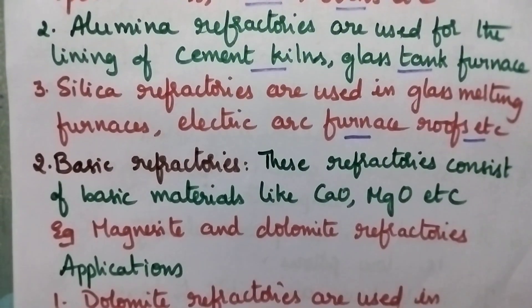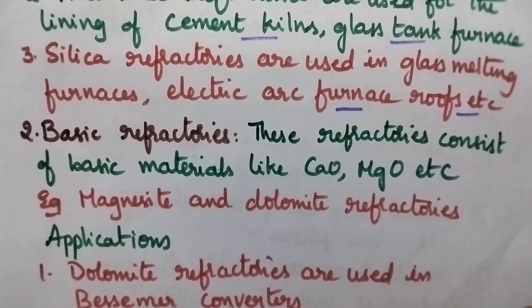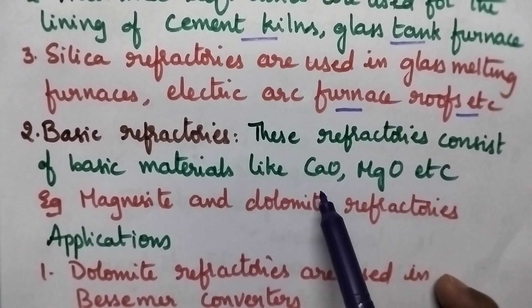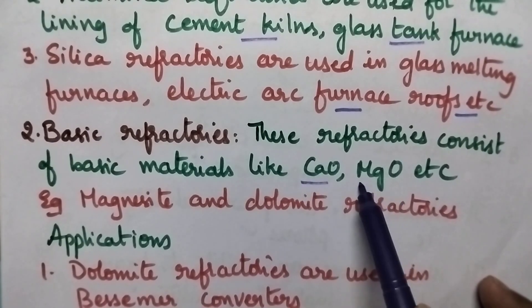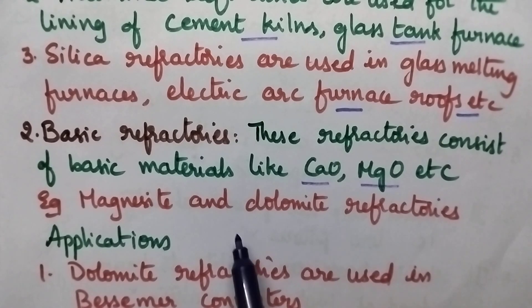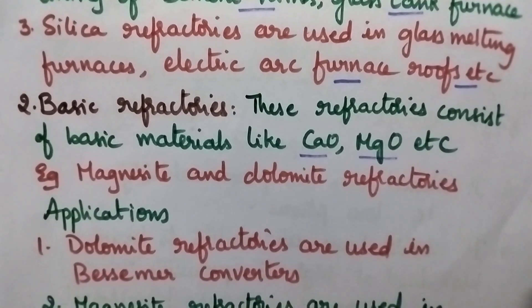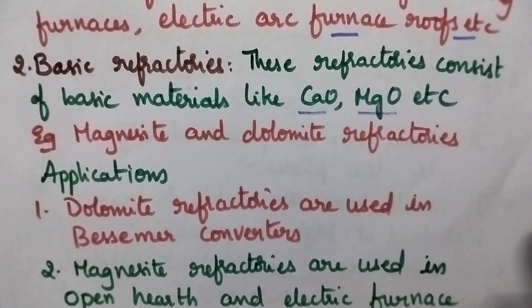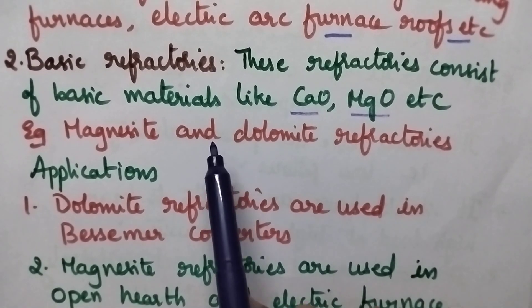Moving to basic refractories, they generally consist of basic materials like CaO and MgO. Good examples include magnesite and dolomite refractories. Basic refractories are not affected by basic materials but are affected by acidic materials.